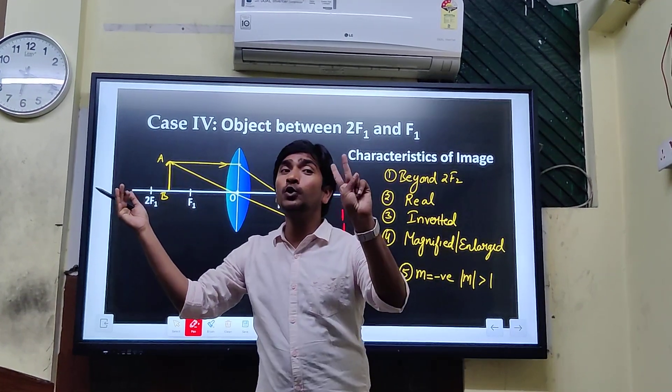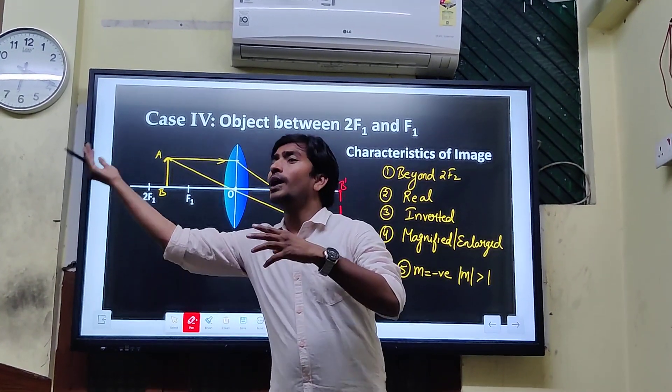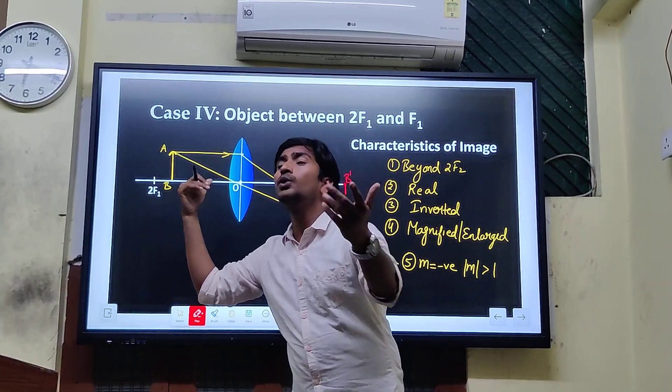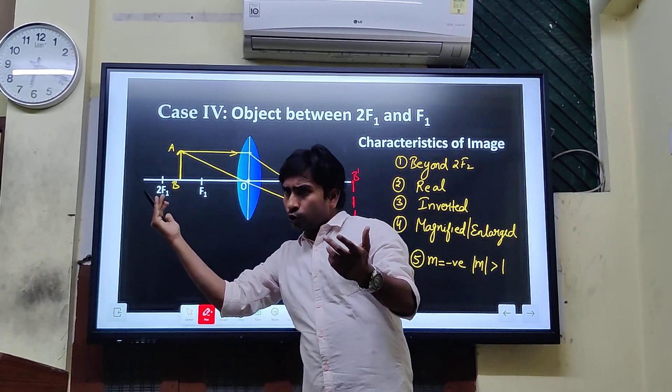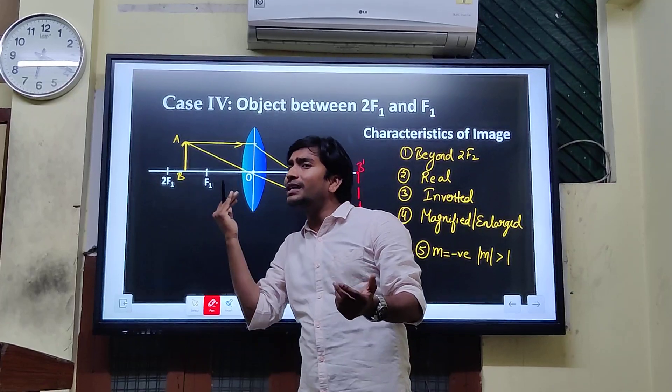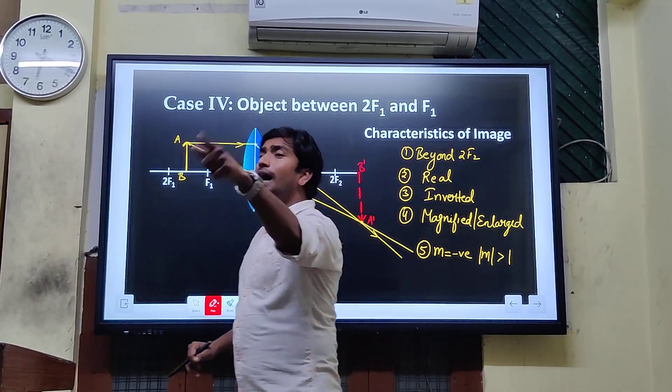Between infinity and 2F1, where was the stoppage? 2F1. Yes, 400 cars were coming, 400 cars F1, 2F1. Where would it be?